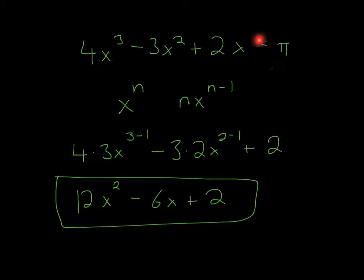And then, since this is a constant, it would just go away. So your final answer would be 12x squared minus 6x plus 2. I hope that helped, and thanks for watching.